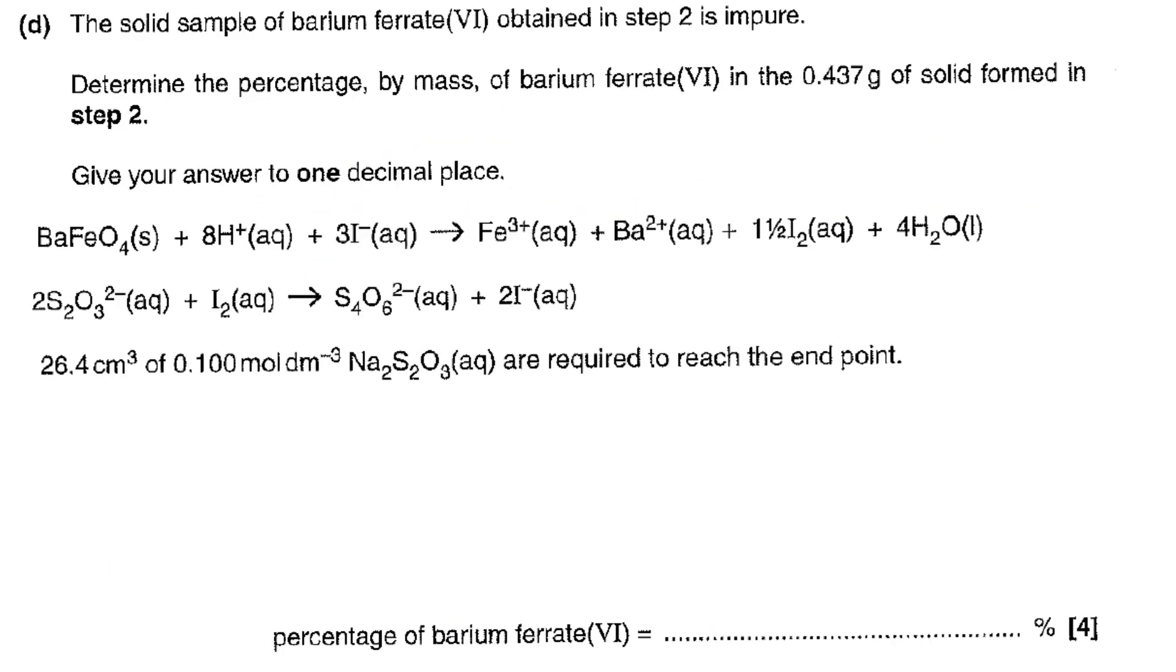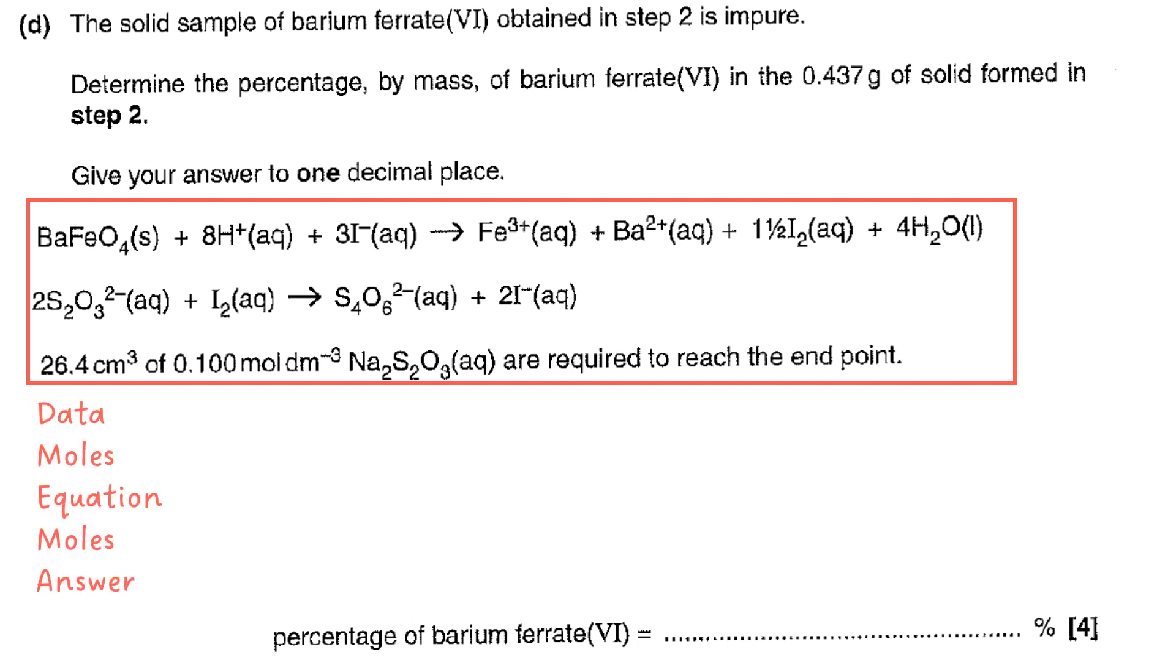So the solid sample of barium ferrate obtained in step two is impure. They want you to determine the percentage by mass. So to do this we need to collect a bit of information from various parts of our description. So I put it all here in the red square and we used the data moles equation moles answer technique to allow us to process it one step at a time. So the data for thiosulfate allows us to work out moles using V times C which is our 2.64 times 10 to the minus 3.